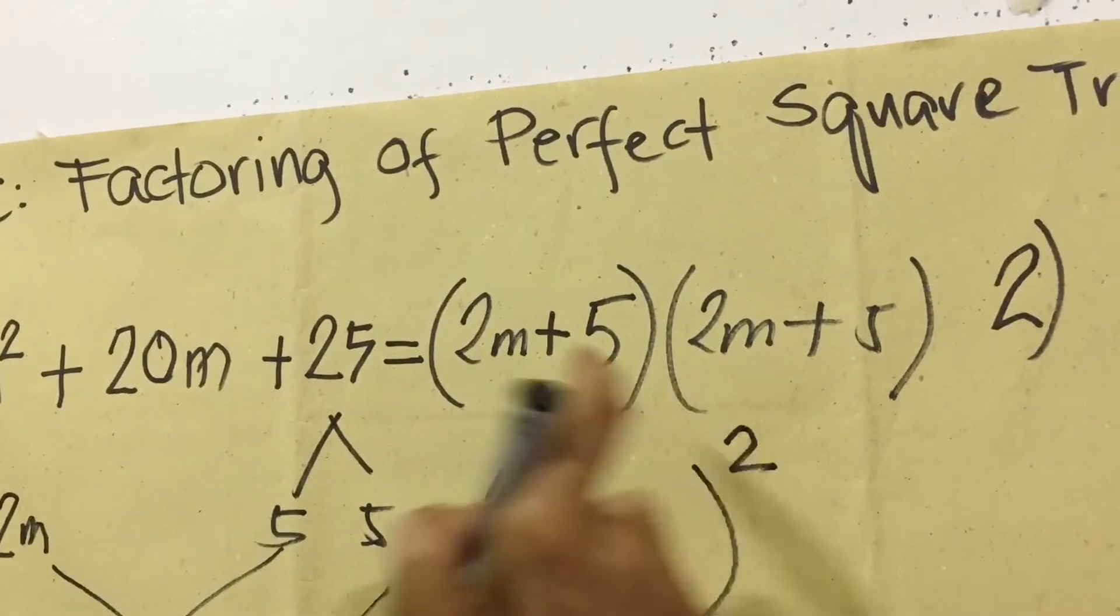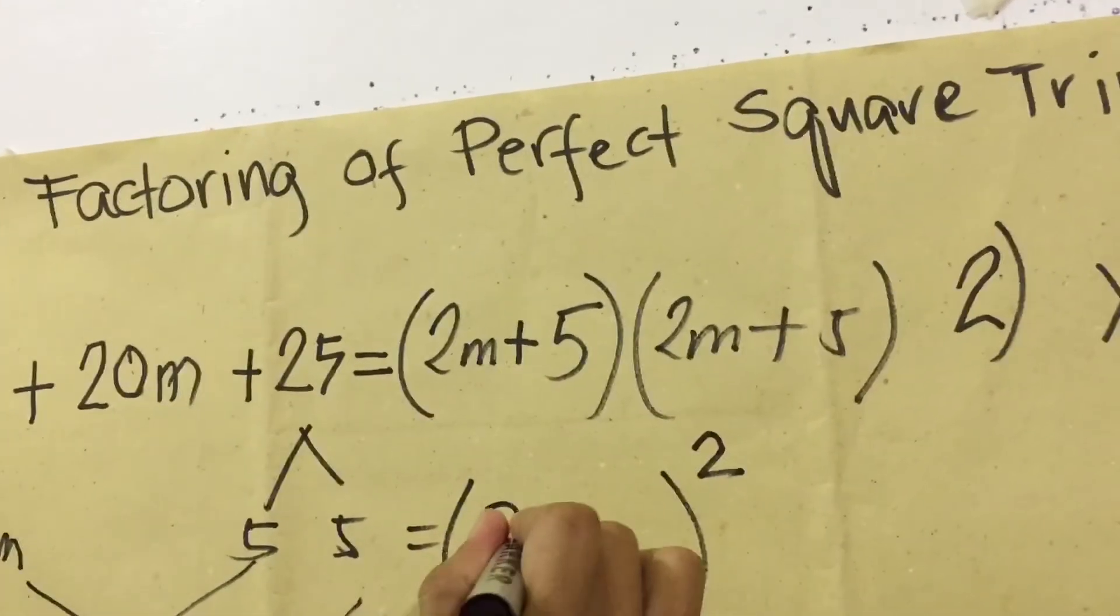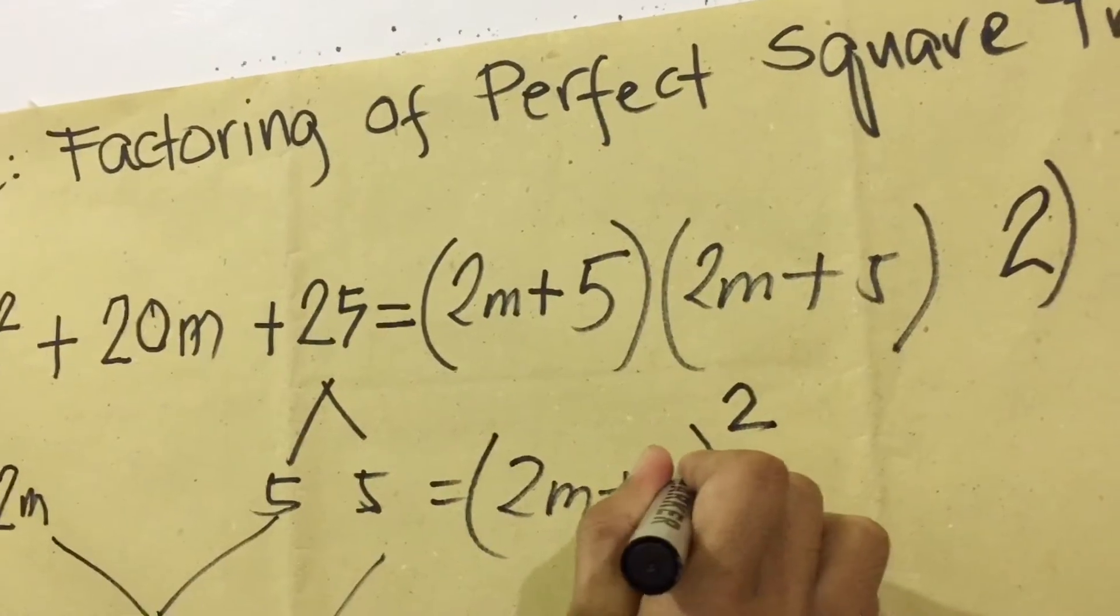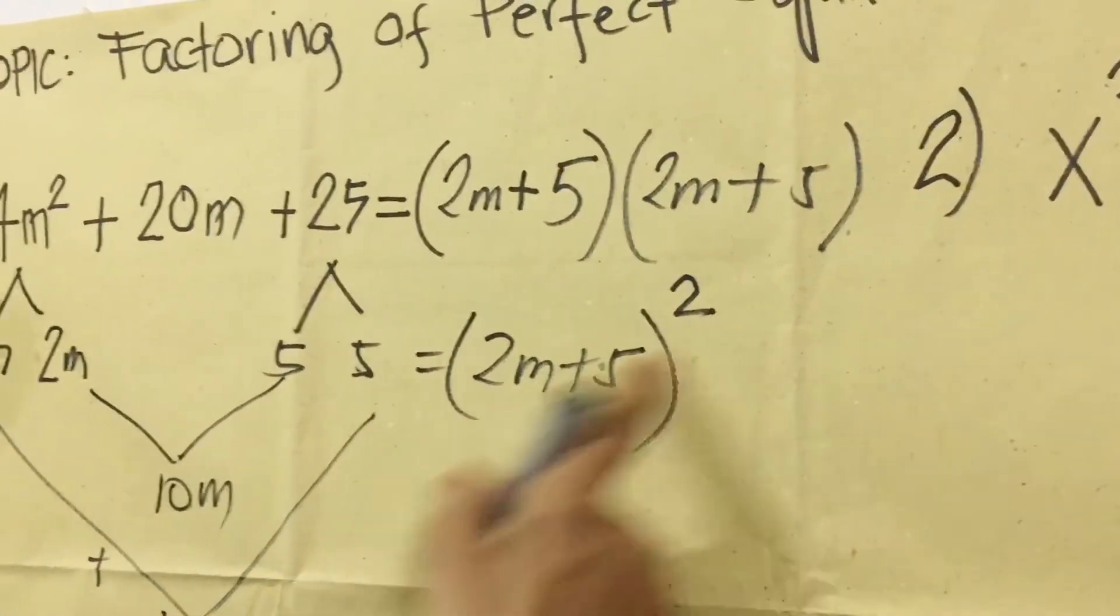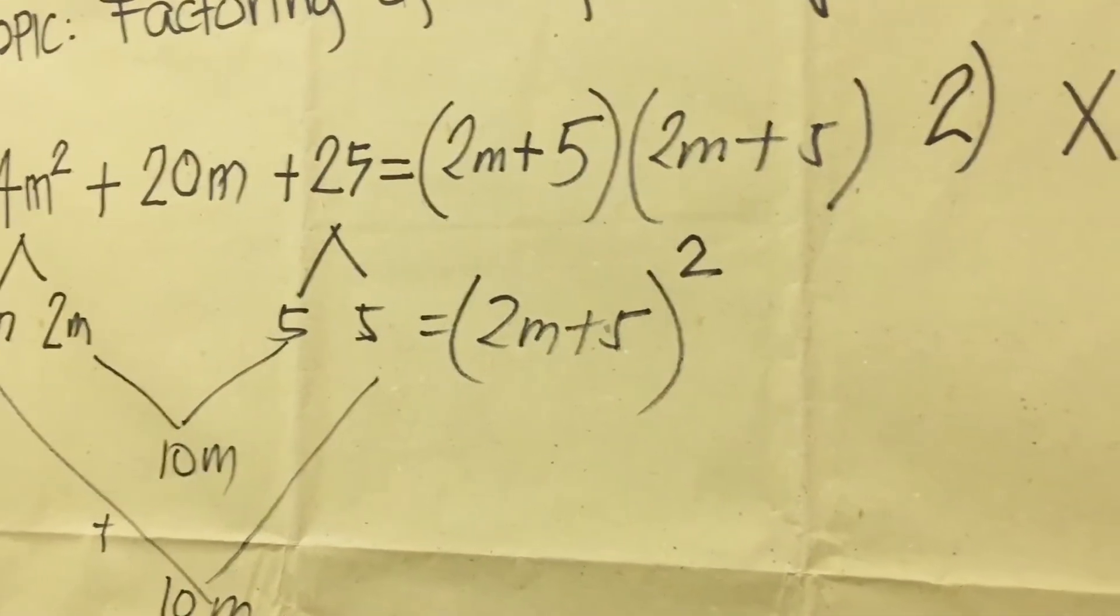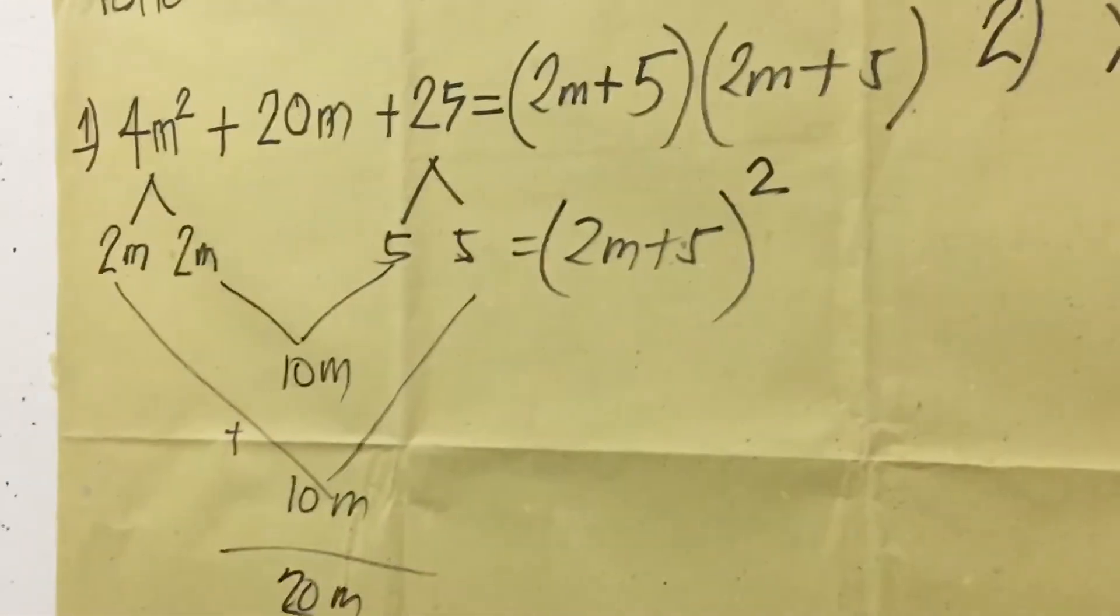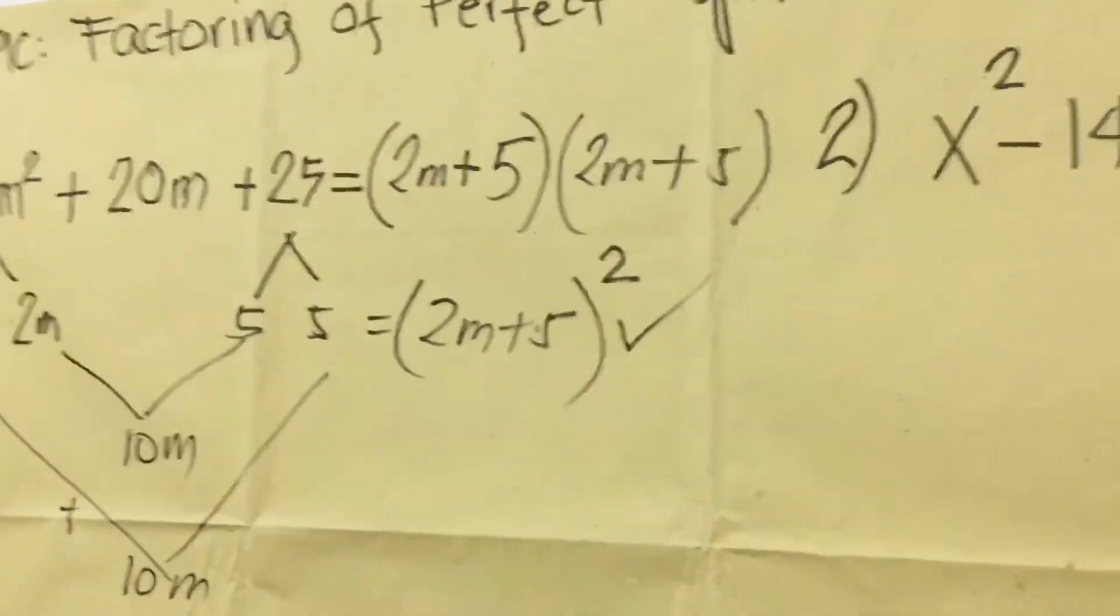When we square it, we have 2m, then again we're going to use only one: (2m + 5)². The factor now is (2m + 5)² which becomes a square binomial. So this is now our answer, that's the factor.